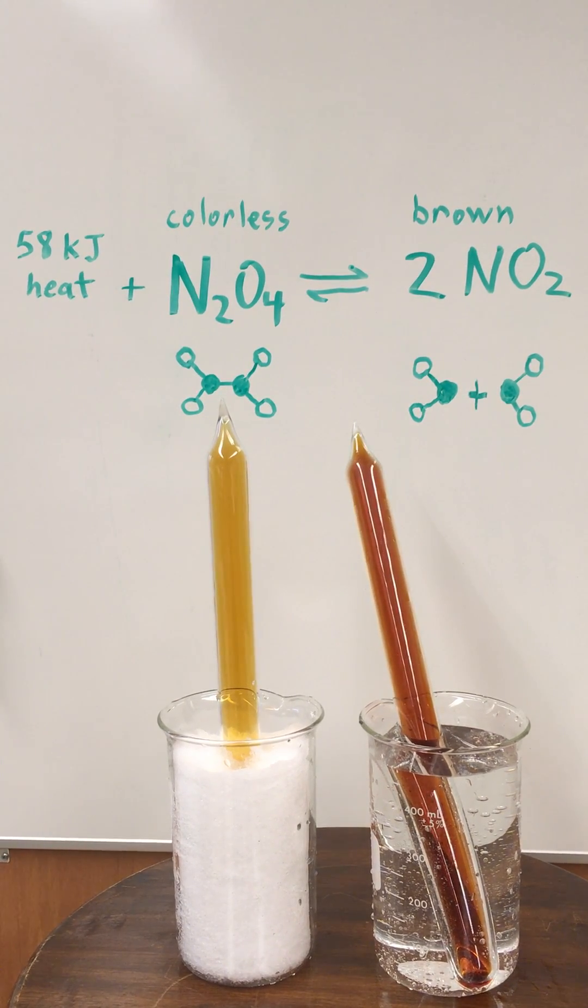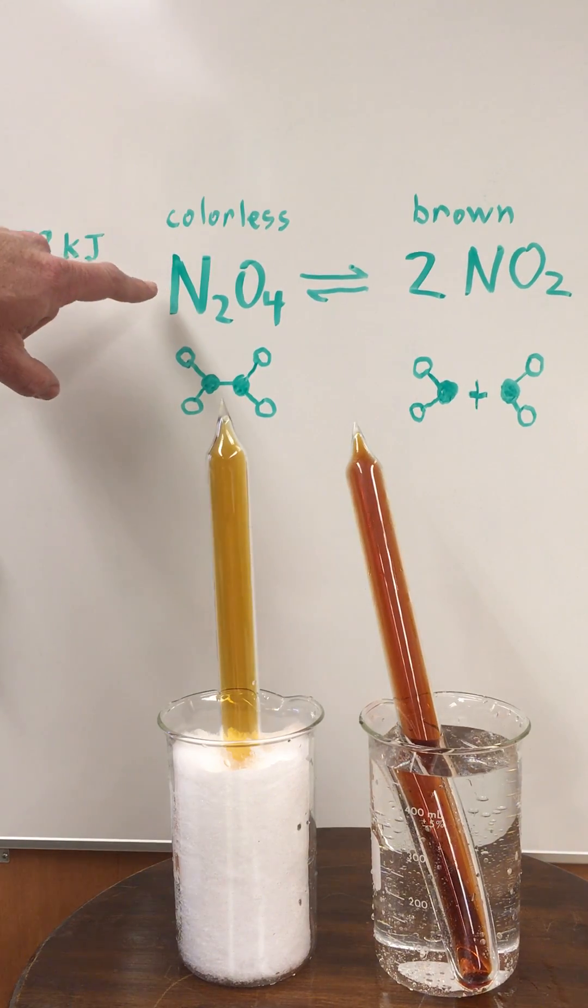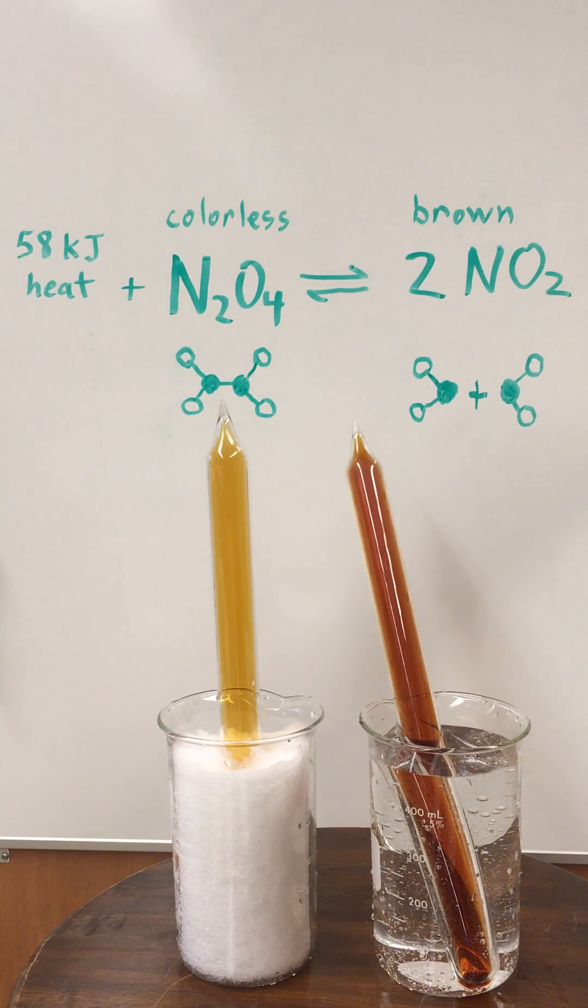What we have here are two gases at equilibrium. We have the colorless dinitrogen tetroxide and the brown colored nitrogen dioxide.